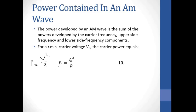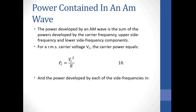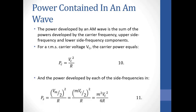The carrier power is the carrier component. As we see from the equation, that component has the amplitude Vc. If we square Vc and divide by R, it gives us the power contained in the carrier component. Next, we calculate the power contained in each side frequency. The amplitude of the side frequency is Vm over 2, so the power of the side frequency is (Vm/2)² divided by R.